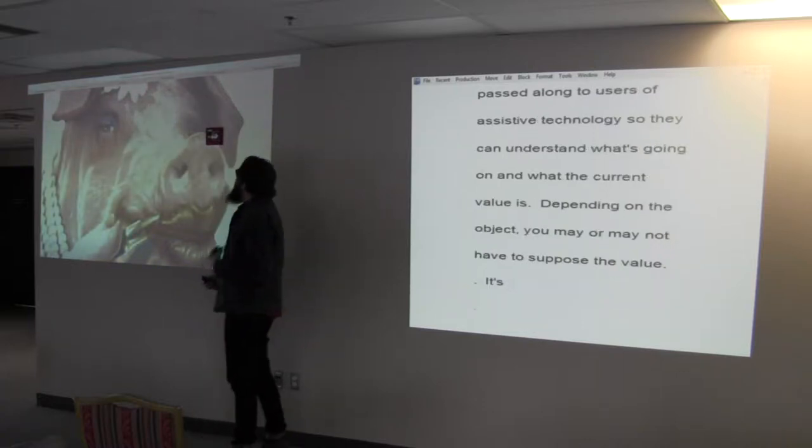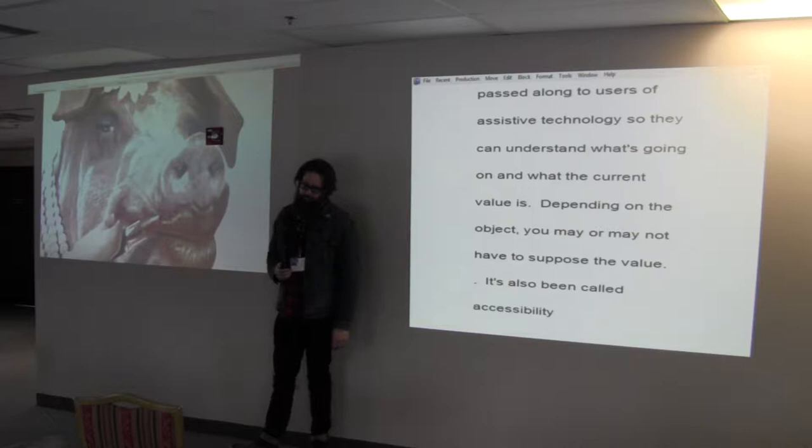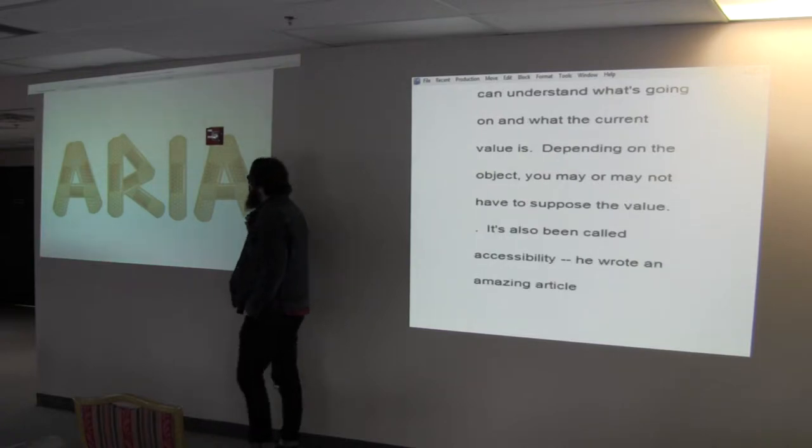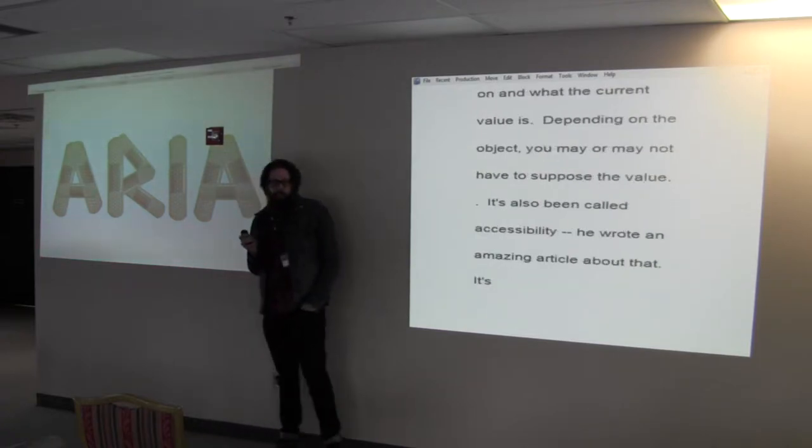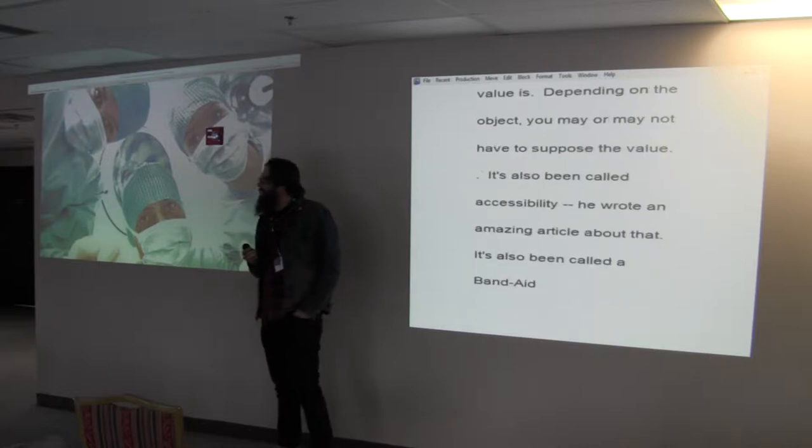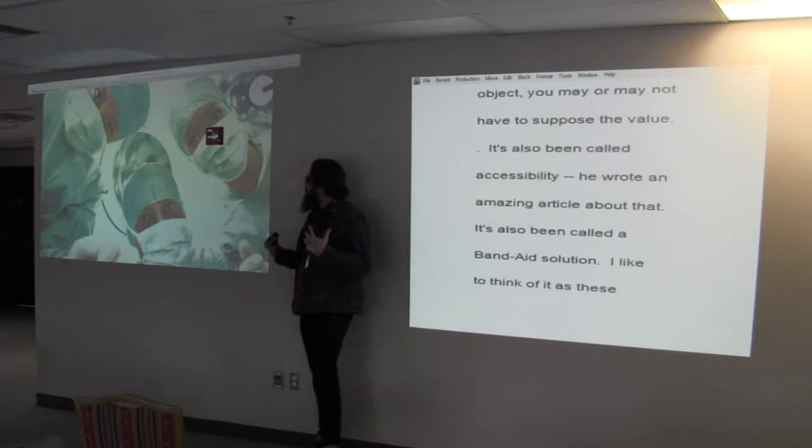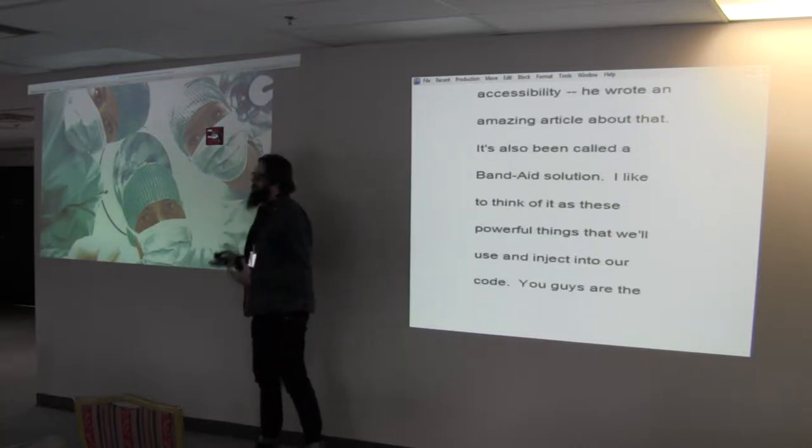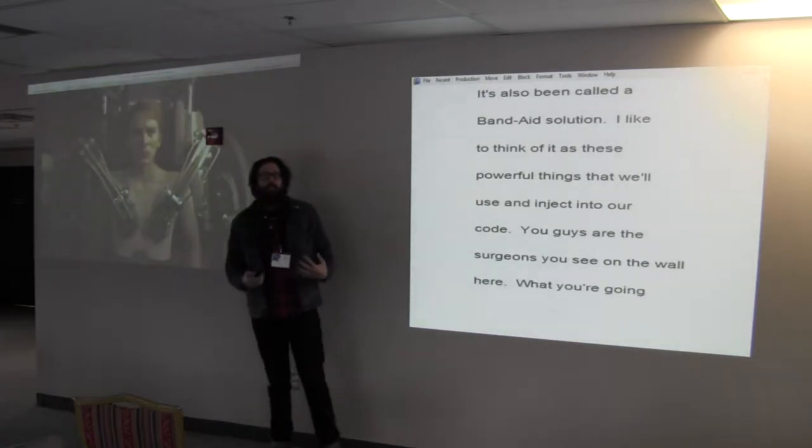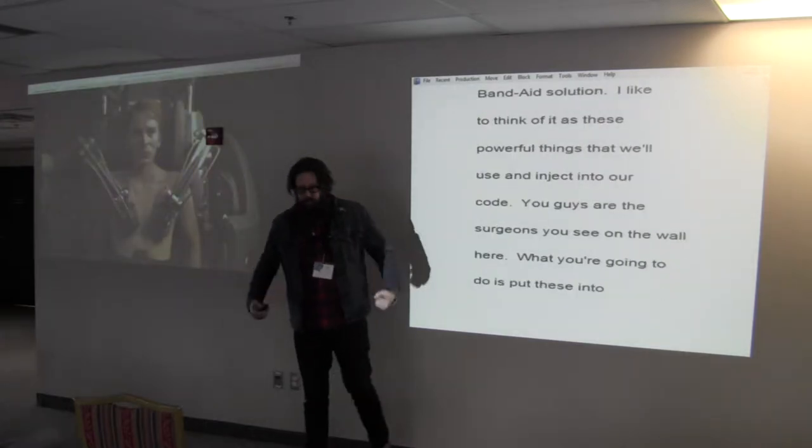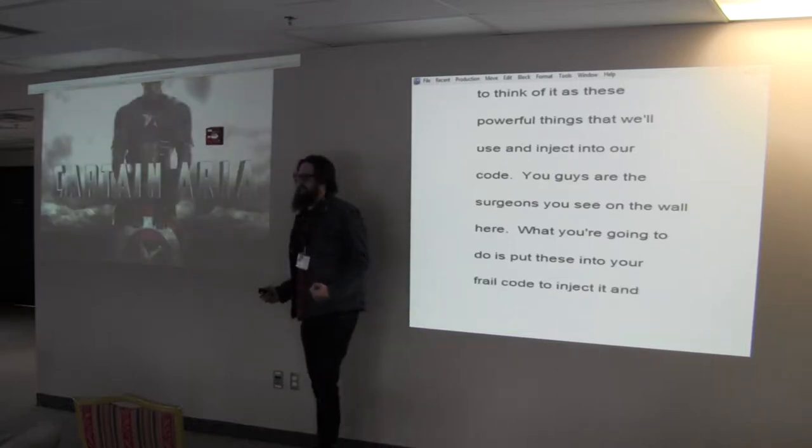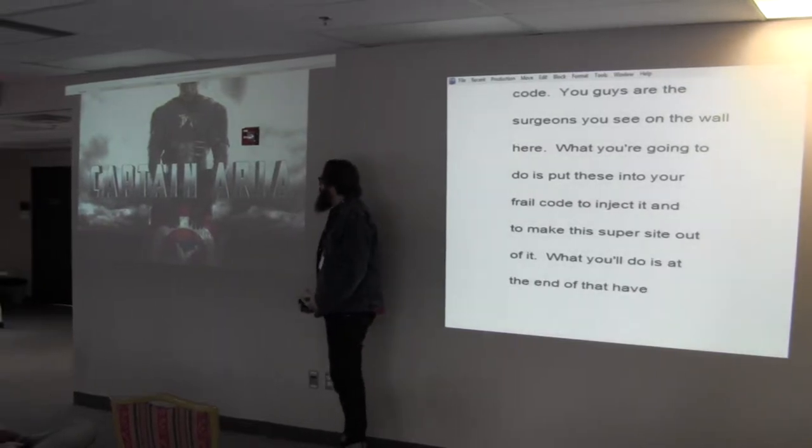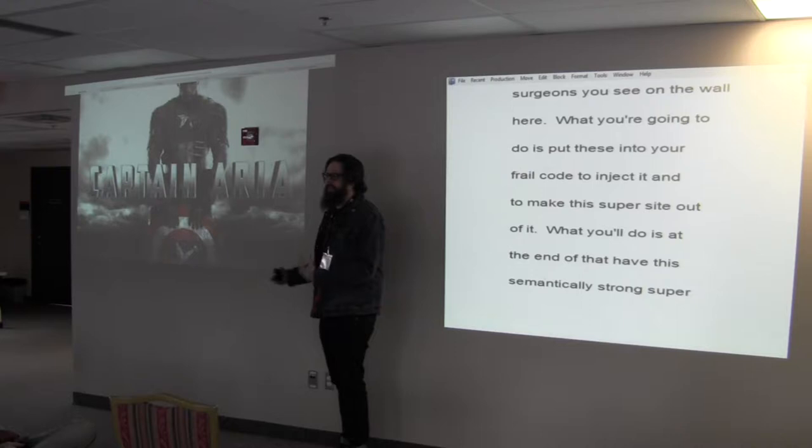It's also being called accessibility identity. It's about a usability change. Jared from Spool wrote an amazing article. I like to think of it as these powerful nanobots that we're going to use and inject into our code. You guys are these surgeons you see on the wall here. And what you're going to do is you're going to put these nanobots into your wimpy, frail code to inject it and to make this super site out of it. And what you're going to do is at the end of that you're going to have this semantically strong, super powerful site that can communicate with ATs in ways that normal HTML would not do.